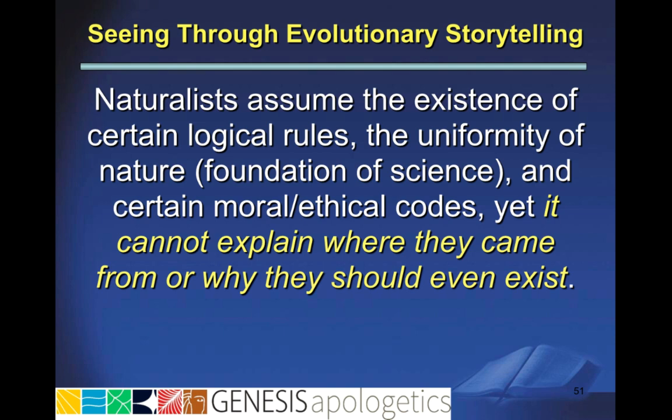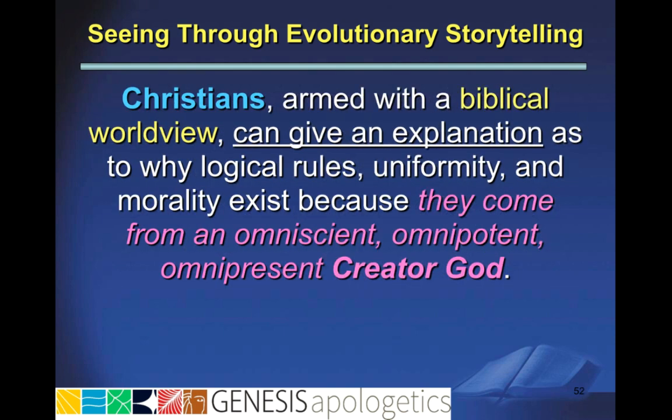Someone might say it's just a description of the way things are, but why are those things the way they are? Why should there be certain logical rules, the uniformity of nature, or moral and ethical codes in a universe in which there is no creator? These things don't make sense. However, a Christian armed with a biblical worldview can give an explanation as to why logical rules, uniformity, and morality exist — because they come from an omniscient, omnipotent, omnipresent creator God. That's why the law of non-contradiction applies everywhere in the physical universe, because there's a single creator God who knows everything and is holding everything together by his power everywhere.